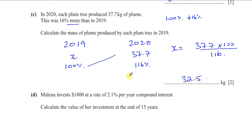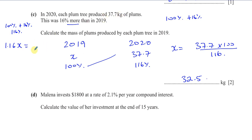You can also do it another way: we know x was produced in 2019, and when x is increased by 16% you multiply by 1.16 — that's 116% as a decimal. So x times 1.16 equals 37.7 kilograms, meaning x equals 37.7 over 1.16, which gives the same answer. I call this the 'before and after method.'